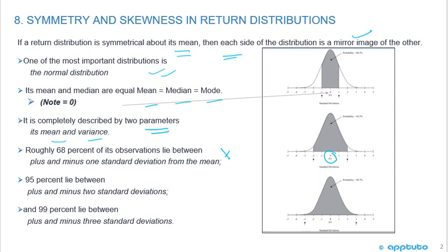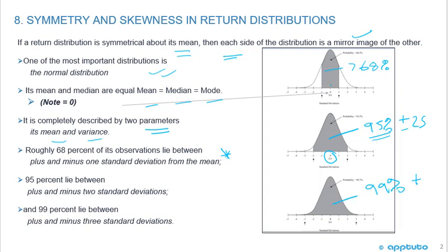Roughly 68% of observations lie between plus and minus one standard deviation. We have the mean at zero, then plus or minus one standard deviation with 68% of observations lying there. 95% of observations lie between plus or minus two standard deviations, and 99% fall within plus or minus three standard deviations.